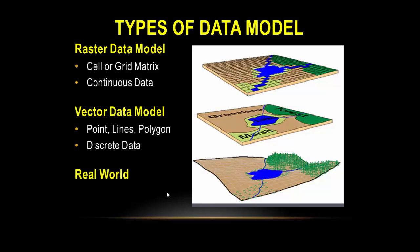The types of data models: the raster data model uses a cell grid matrix representing continuous data, as shown in the upper figure with cells. The vector data model is represented by points, lines, and polygons as discrete data. The last figure shows the real world, which is represented differently in vector data — using polygons and lines — and in raster data using different cells and pixels.